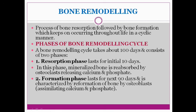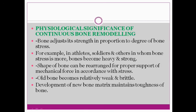Bone remodeling is a process which keeps occurring throughout your life in a cyclic manner. It includes two phases: the resorption phase — the initial approximately 10 days when osteoclasts release calcium and phosphate — and the formation phase, which lasts around 90 days and is characterized by reformed osteoblasts accumulating calcium and phosphate again. The physiological importance of bone remodeling: first, bone adjusts its strength in proportion to the degree of bone stress; second, it provides proper shape for support of mechanical forces; and third, old bone which becomes weak and brittle is replaced by new bone matrix that maintains toughness.